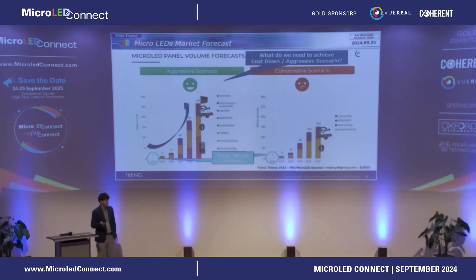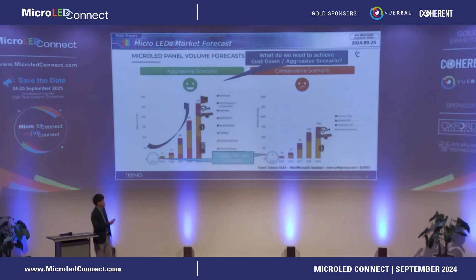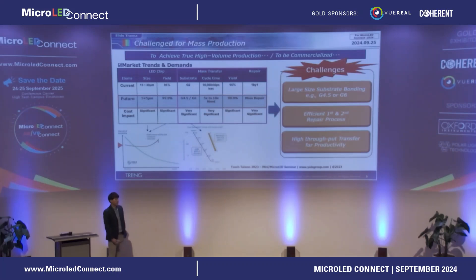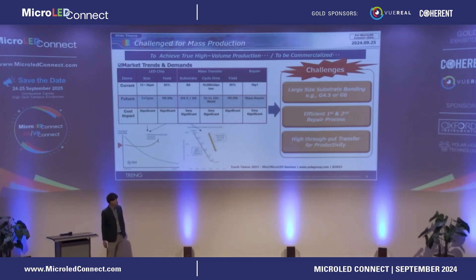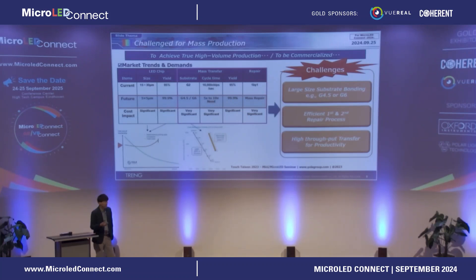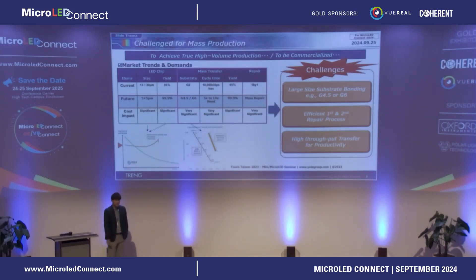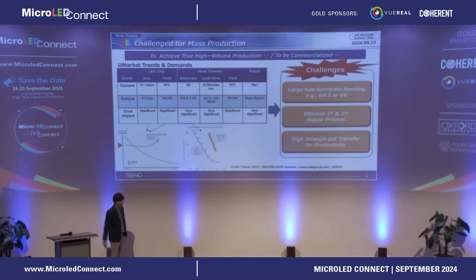To achieve actual mass production, we have several challenges. The main challenge is how to handle large substrates to reduce cost — for example, G4.5 or G6. Of course we have to achieve the highest throughput and higher productivity. We also have to address the repair process at the same time, so we will focus on the mass transfer process.